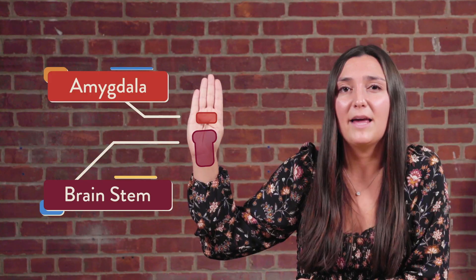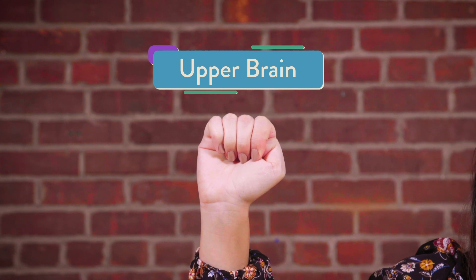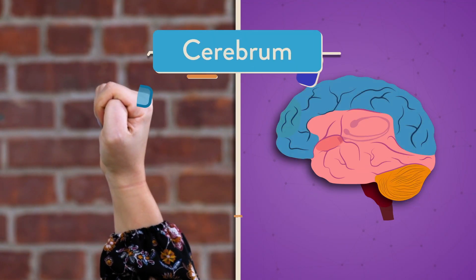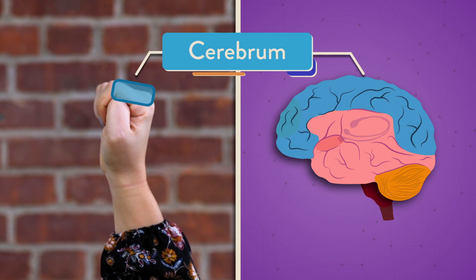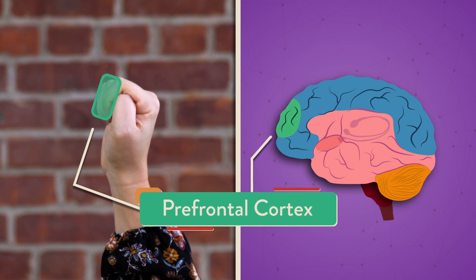We have more sections of the brain to make. Now that we have our amygdala, wrap your fingers over your thumb to make a fist, just like this. These fingers represent our upper brain. Back here is our cerebellum — that keeps us balanced. Up top, we have our cerebrum — that helps us think and speak. And right up front, we have the prefrontal cortex, which helps us make smart decisions. This is our hand-brain model, and it's a great symbol of our brain.